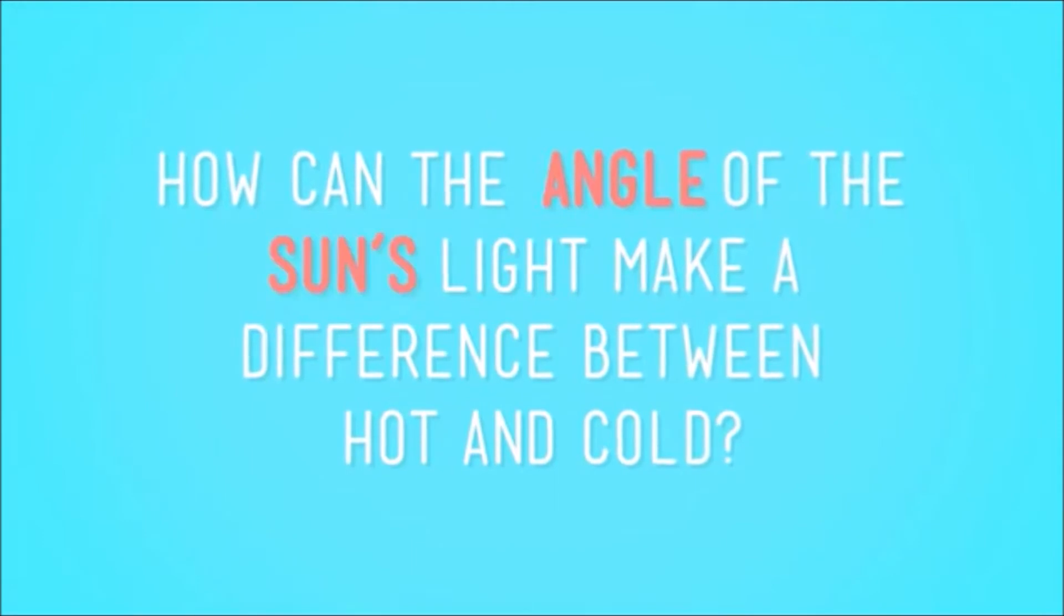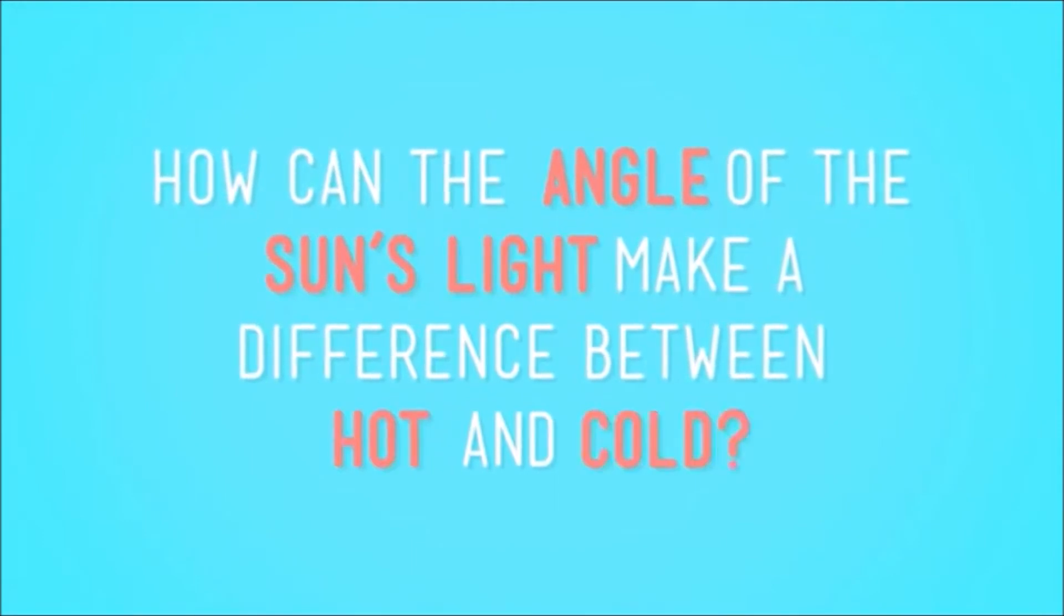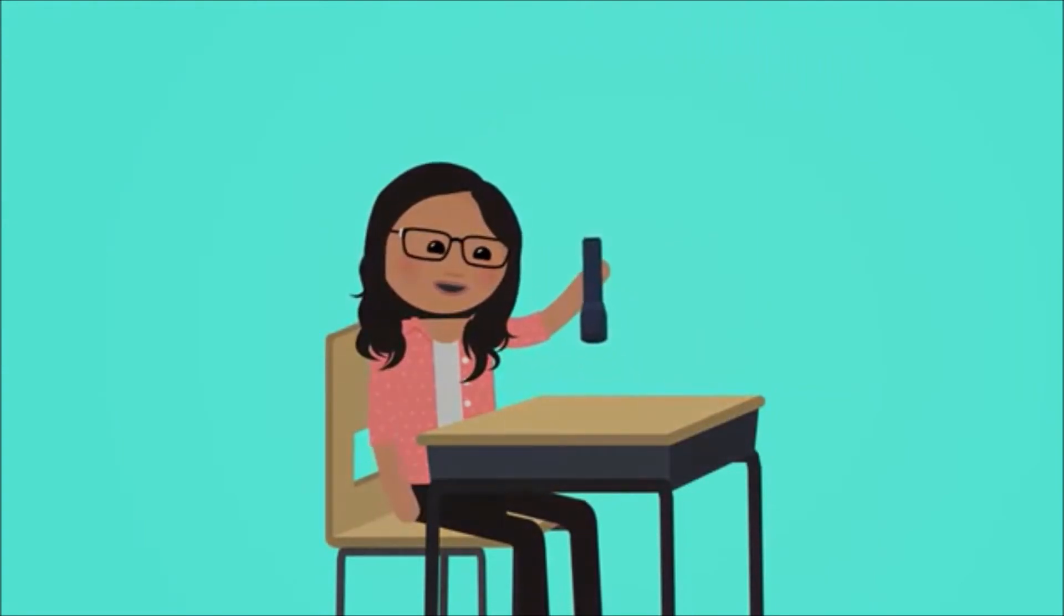But how can the angle of the sun's light make a difference between hot and cold? Well, try this little trick with a flashlight. Get a flashlight and dim the lights in your room a little bit.